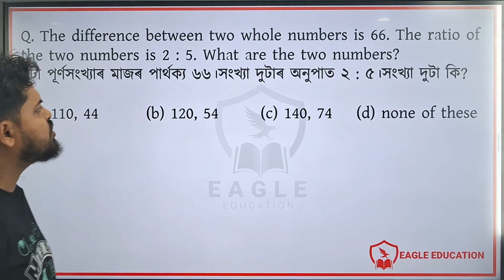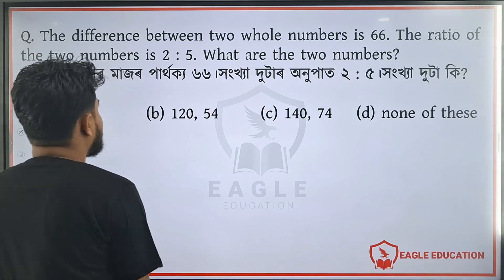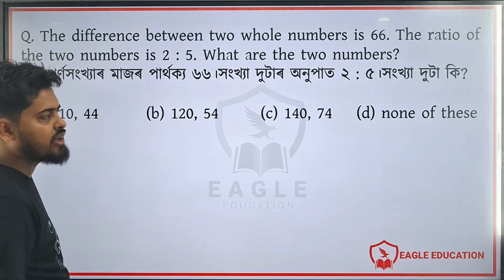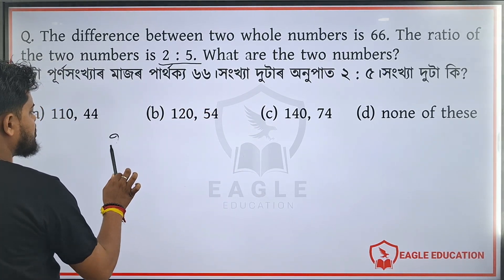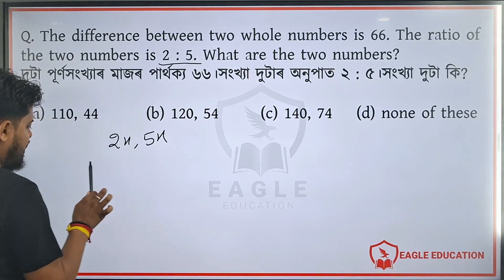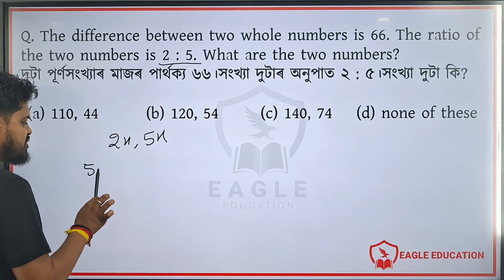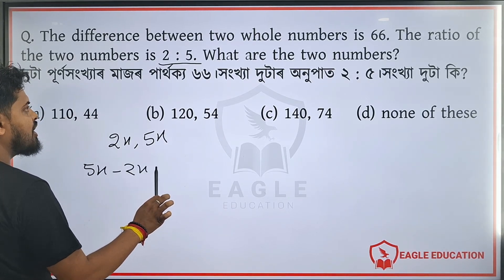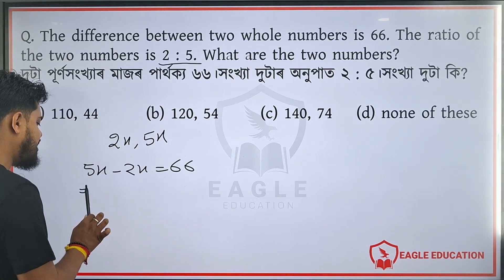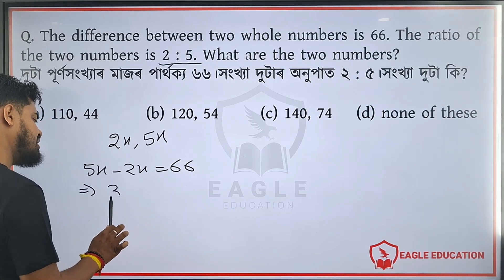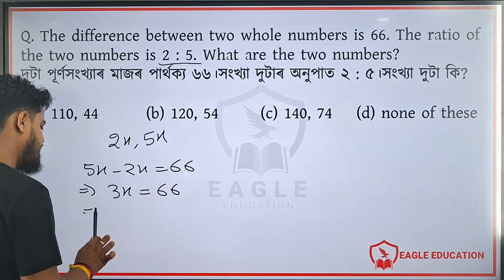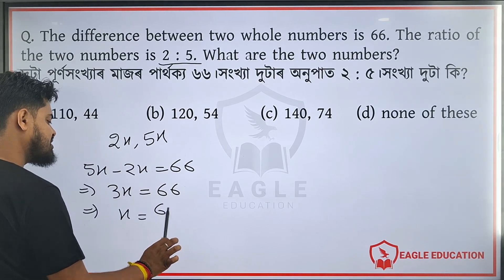The difference between two whole numbers is 66. One number is twice the other. So if you have x and 2x, the difference gives you 3x equals 66.